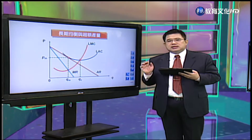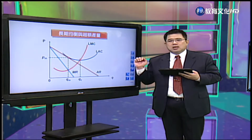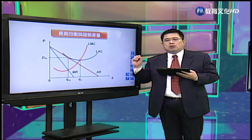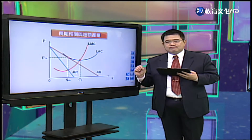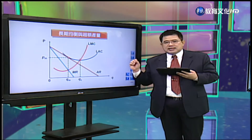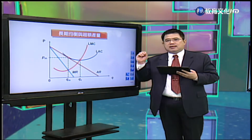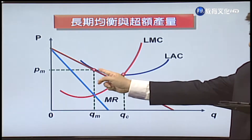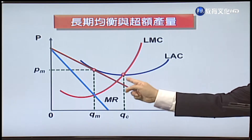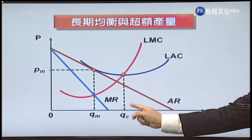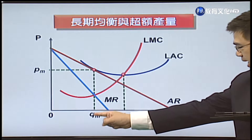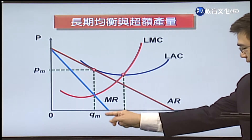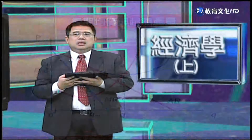独占性竞争跟完全竞争市场的不同在于：完全竞争市场个别厂商面对的需求曲线是水平线，而独占性竞争是负斜率的。在同样没有超额利润的状况之下，独占性竞争市场个别厂商最后会生产在长期平均成本递减的阶段，而完全竞争市场个别厂商长期下会在长期平均成本最低点生产，具有生产效率。因此独占性竞争厂商还有超额产能，这些产能没有好好被利用。